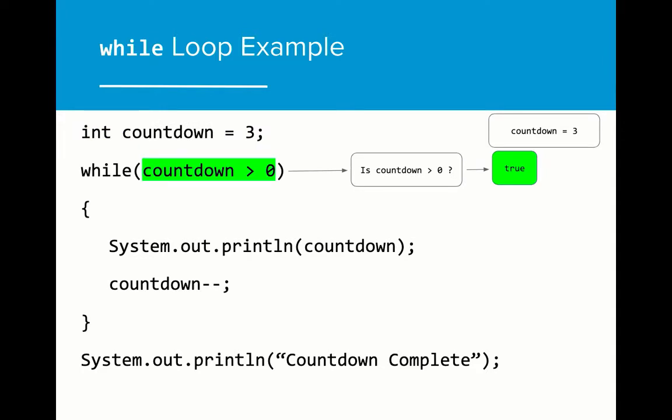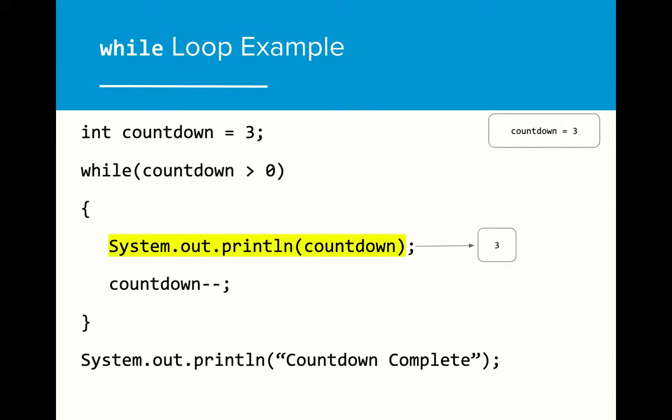On the first pass through, the expression evaluates as true as countdown is greater than zero. The while loop now will execute. The first action is to print the value of countdown, which in this case is three. Next, the value of countdown is reduced by one. This is a crucial step in the program. Can you guess why?